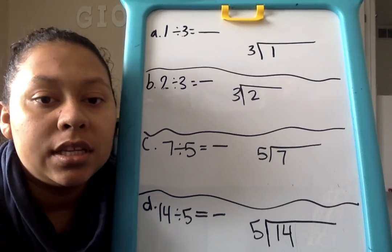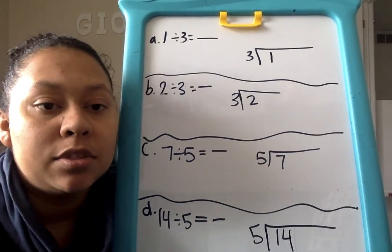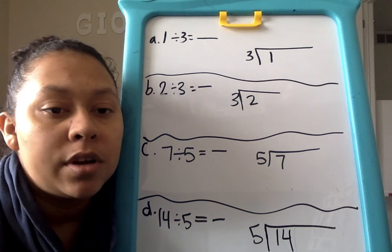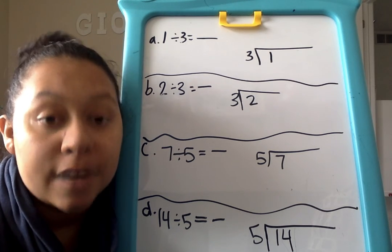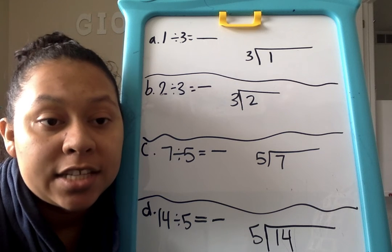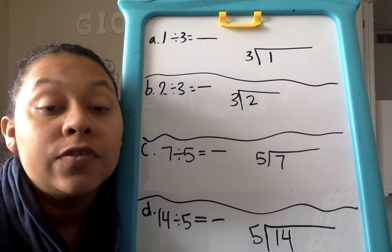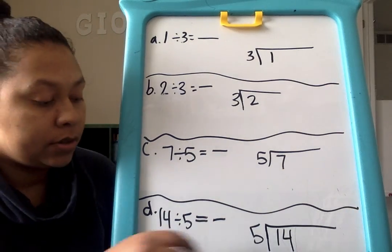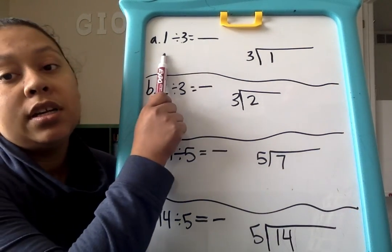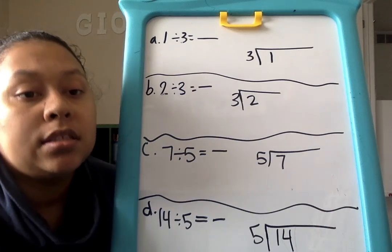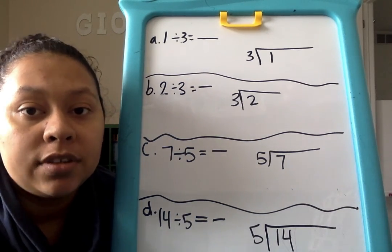So number 1 on the ClassKick assignment says draw a tape diagram to solve — we're not going to do that. Express your answer as a fraction. Show the multiplication sentence to check your answer — we're going to skip that part as well. The first one is done for you. So in 1A, it says 1 divided by 3.